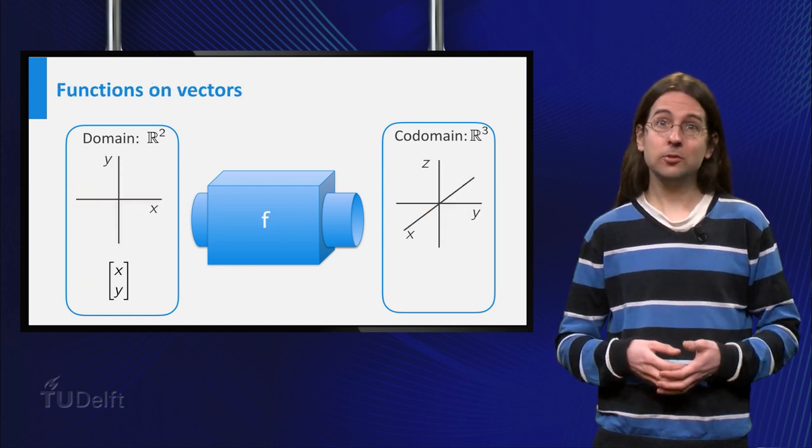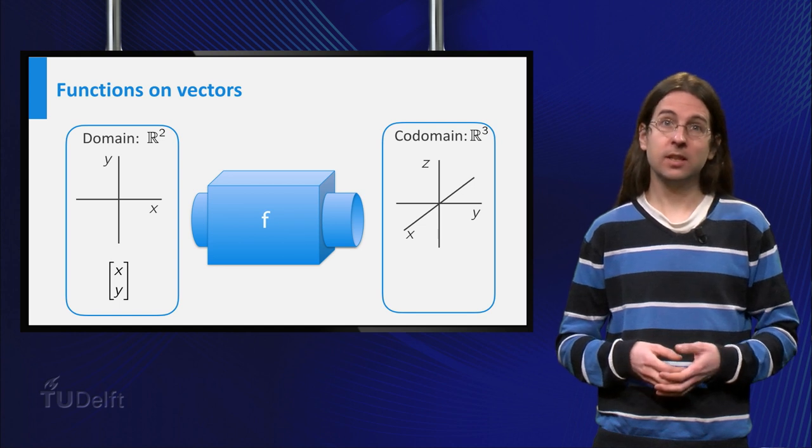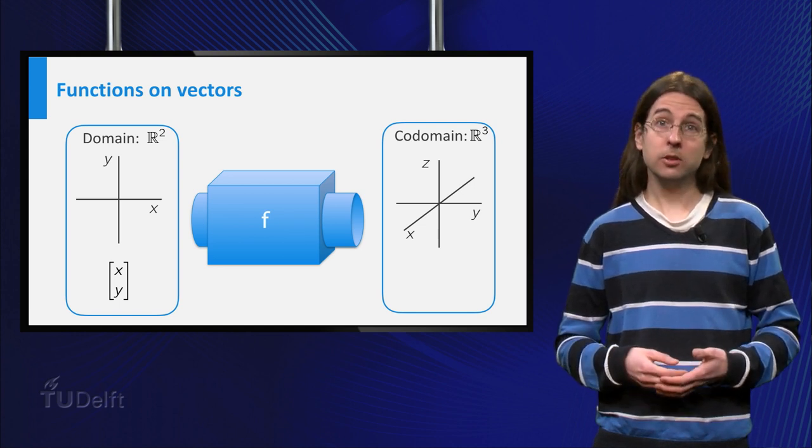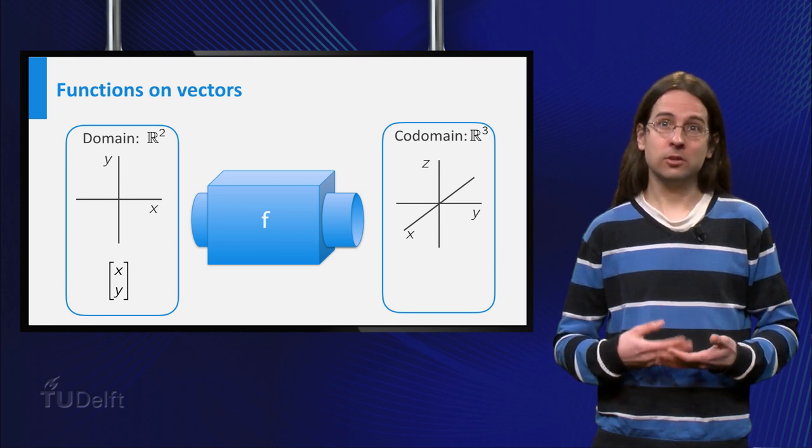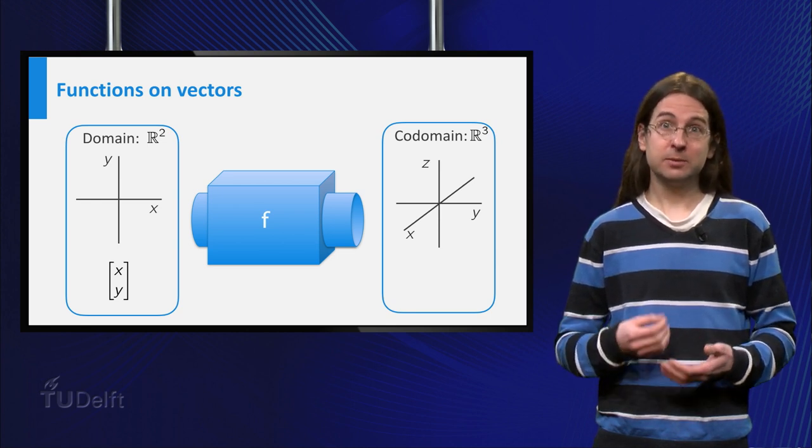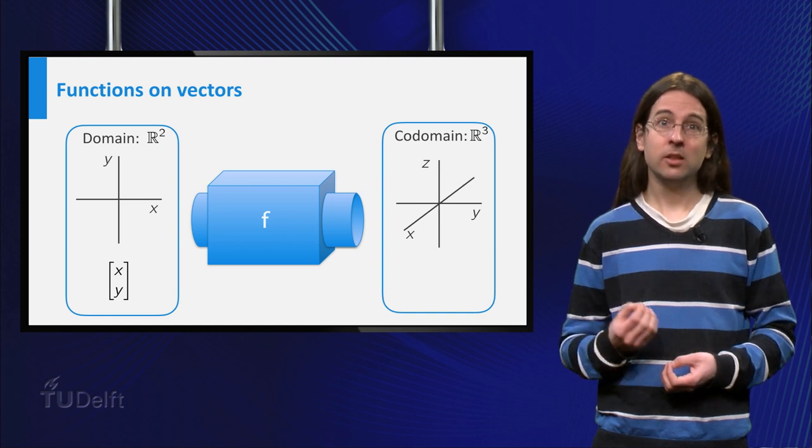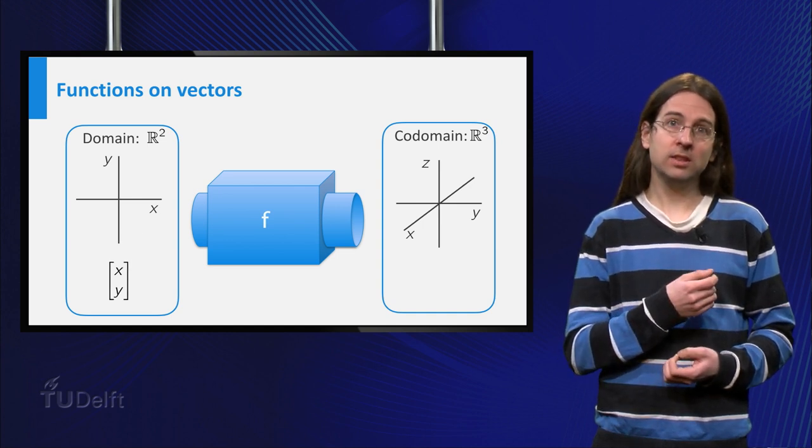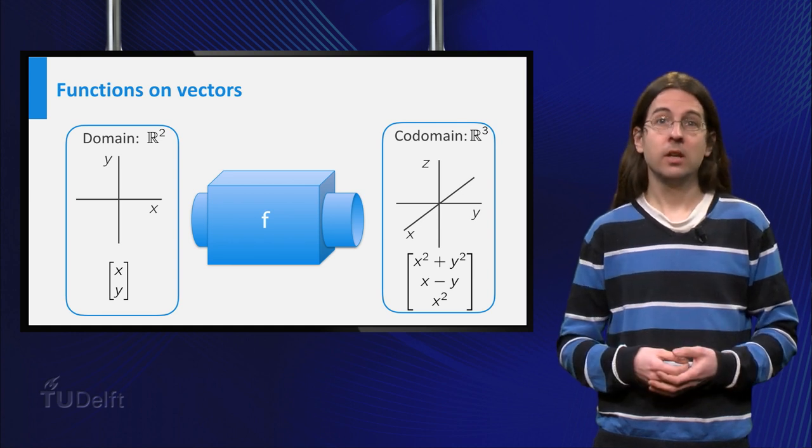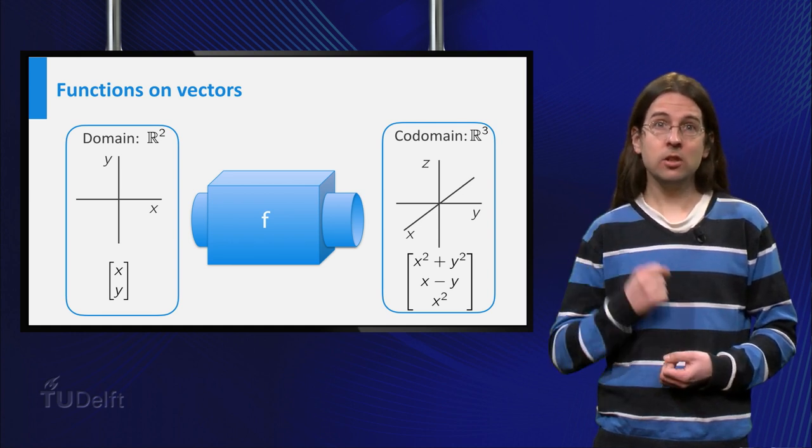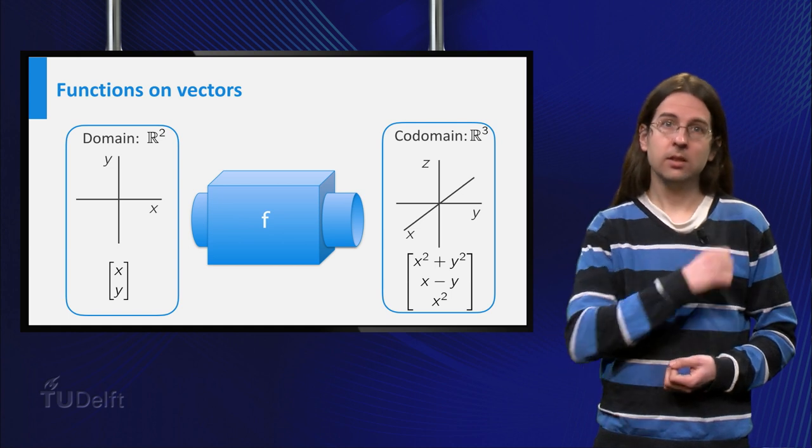More generally, you can also take vectors as inputs and outputs. For example, you can look at the function f from R² to R³, which maps the vector (x,y) to (x²+y², x-y, x²). In this case the domain is R² and the codomain is R³.